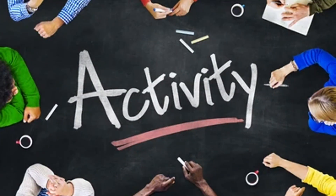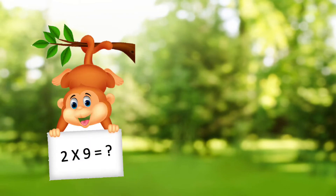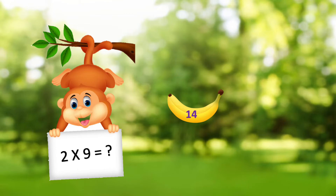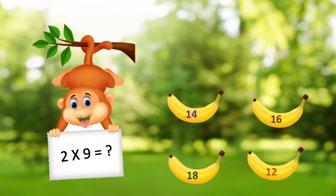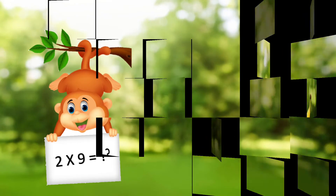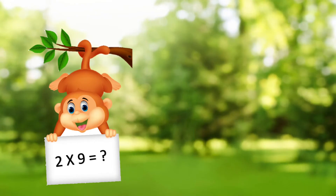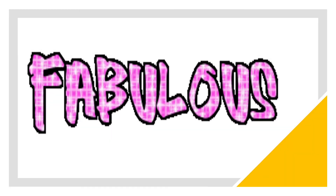So we have learnt the table of 2 — why not have our activity? The first question is: What is 2 × 9? This is the monkey — what does a monkey like to eat? Banana! So the options are about bananas: 14, 16, 12, and 18. The correct answer is 18. Fabulous!